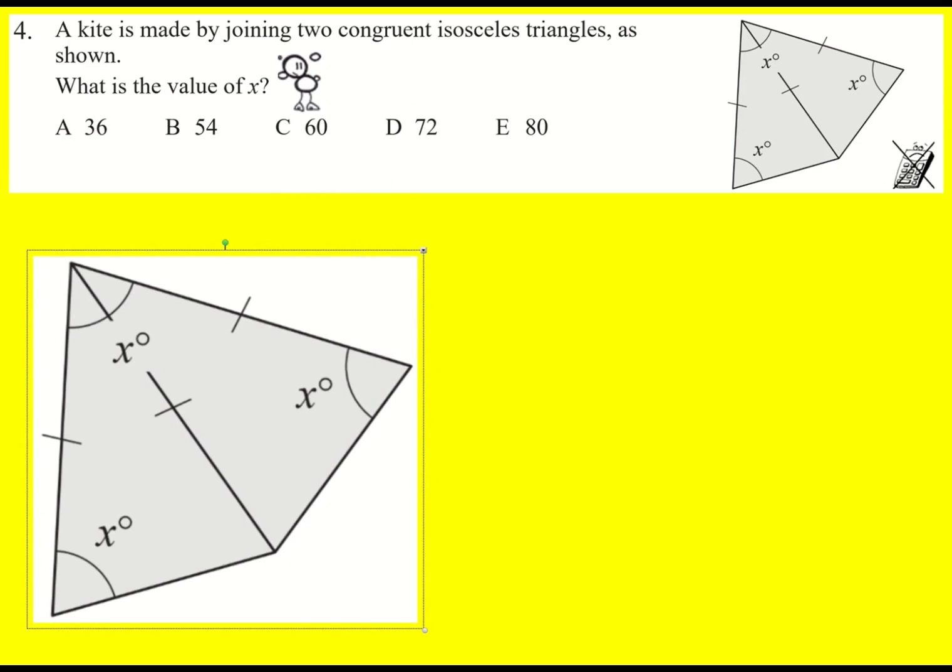Here's a slightly bigger kite for us to work with. We're told that we are joining together two congruent isosceles triangles. So you can see these three sides that are all the same and we're given some angles in them.